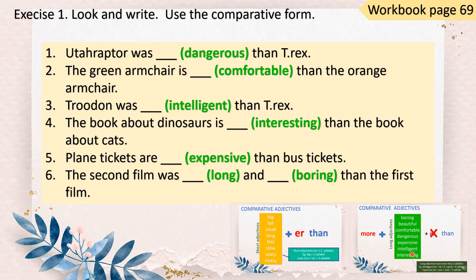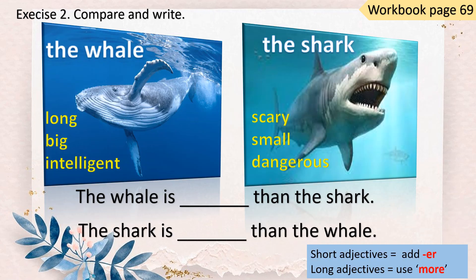Next, you can try Exercise 2. You compare the whale and the shark and write sentences. You begin with 'The whale is...' If you talk about the whale, the whale is long, big, intelligent — but you have to make it into comparative form because you have the word 'than'. Then the shark: the shark is scary, small, dangerous, than the whale. So all these adjectives, you have to put -ER or 'more'. Remember: short adjectives use -ER, long adjectives use 'more'. You write 3 sentences about the whale and 3 sentences about the shark. The adjective still stays the same.